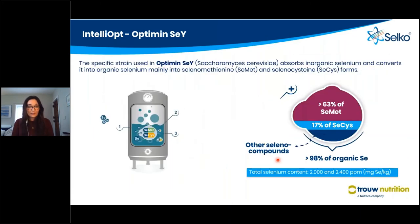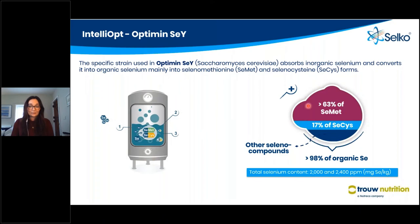Optimin Selenium is slightly different in that it is a selenized yeast. We allow a yeast strain — Saccharomyces cerevisiae — to do the work for us and form the organic trace mineral. We grow this yeast in a fermentation vessel and it produces seleno amino acids such as selenomethionine and selenocysteine.